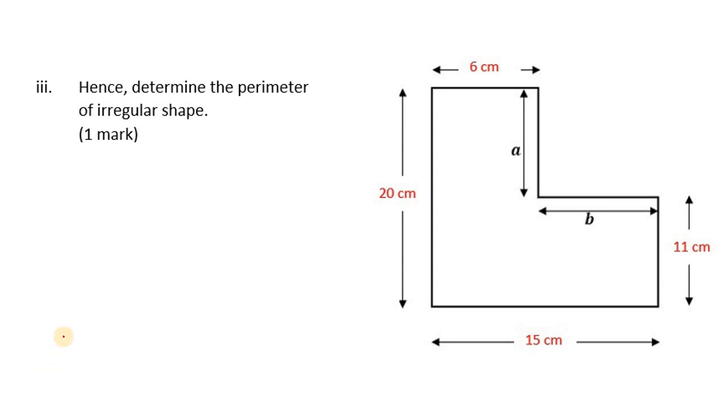Now, how do we find the perimeter of the shape? The perimeter means the distance all around the shape. Now, we found A, which was 9. Let's just double check that. Yeah? So this is, A is actually 20 minus 11. That's 9. This is 9 centimeters. B is 15 minus 6, which is also 9 centimeters.